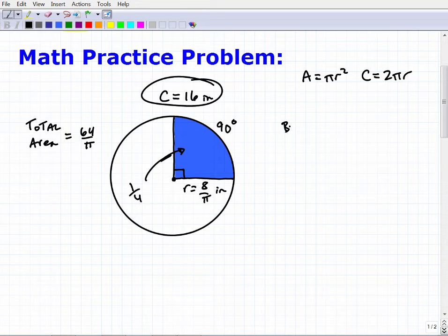So the blue area is going to be 1 fourth of the total area. So that's going to be 1 fourth times 64 over pi. So the blue area is going to be equal to 16 over pi. 4 goes into 64, 16. All right, so now I have the blue area, I have the total area.